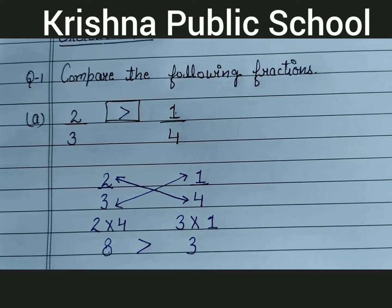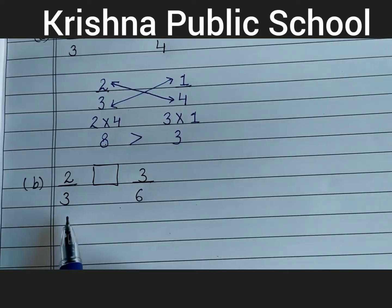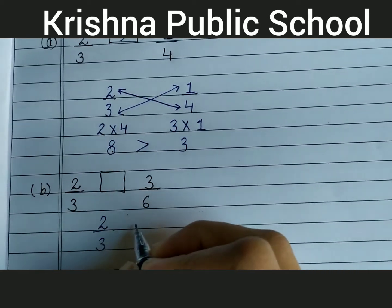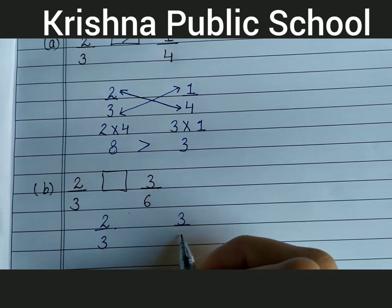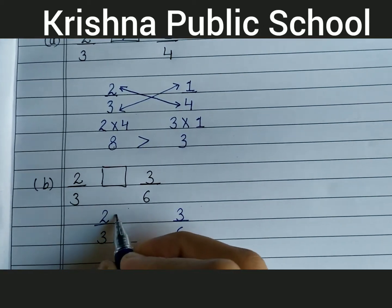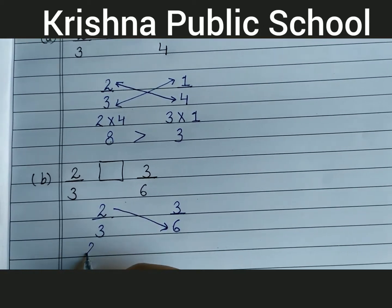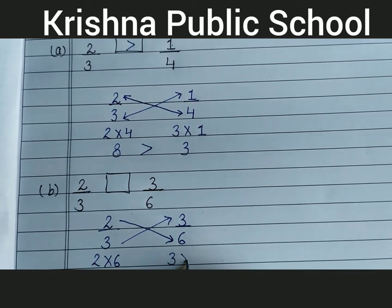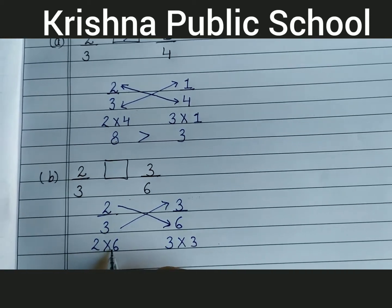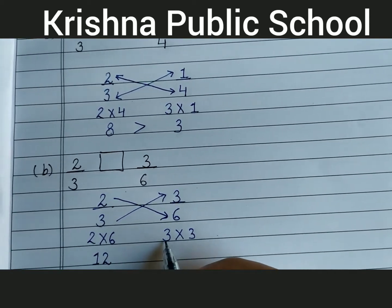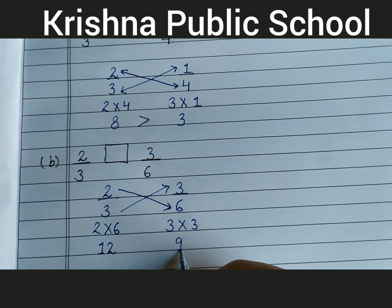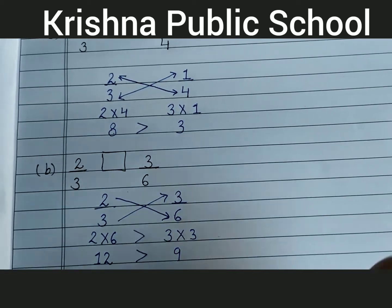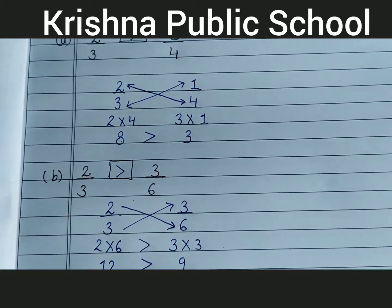This is the answer. Next, compare 2 upon 3 and 3 upon 6 by cross multiplication. 2 multiply 6, 3 multiply 3. 2 multiply 6 equal to 12, 3 multiply 3 equal to 9. 12 is greater than 9, so your answer is 2 upon 3 is greater than 3 upon 6.